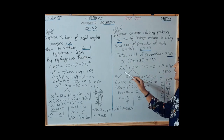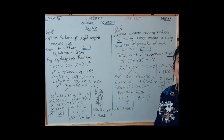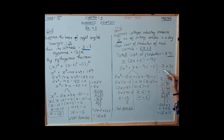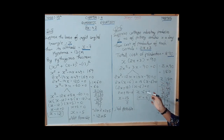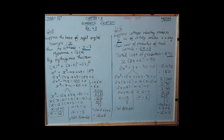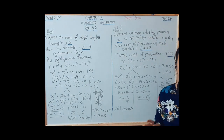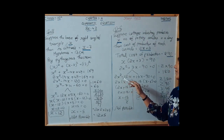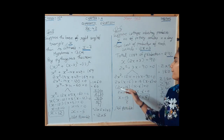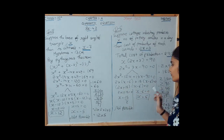Equating this gives 2x squared plus 3x minus 90 equals 0. Using the factorization method, 2 into 90 equals 180, and the factors of 180 are 12 and 15. The four-term equation is 2x squared minus 12x plus 15x minus 90 equals 0. By making pairs and taking common, we get the roots.